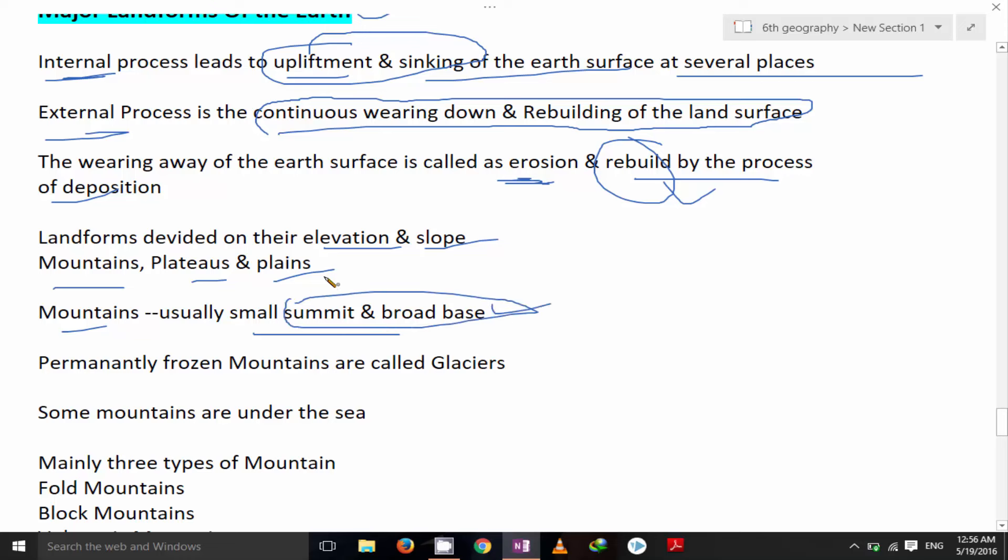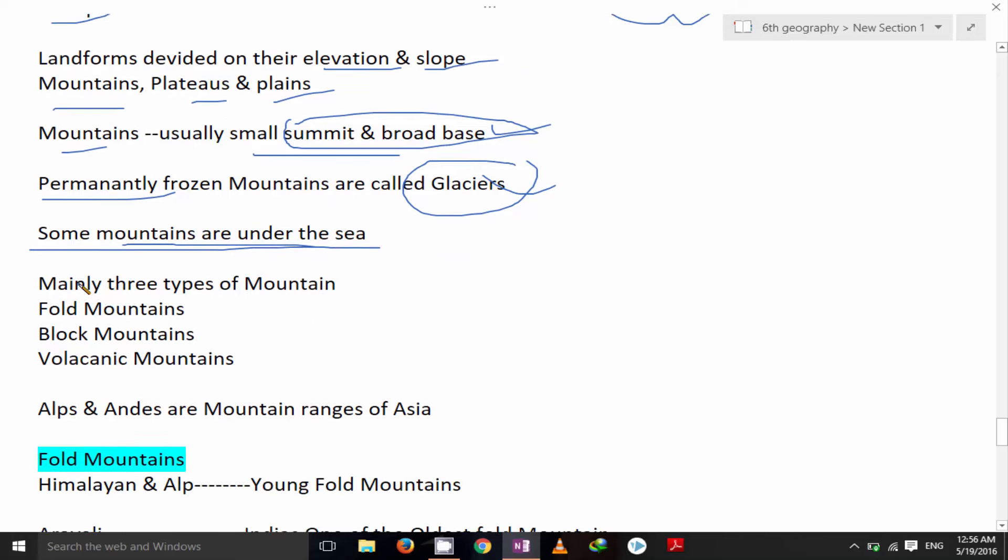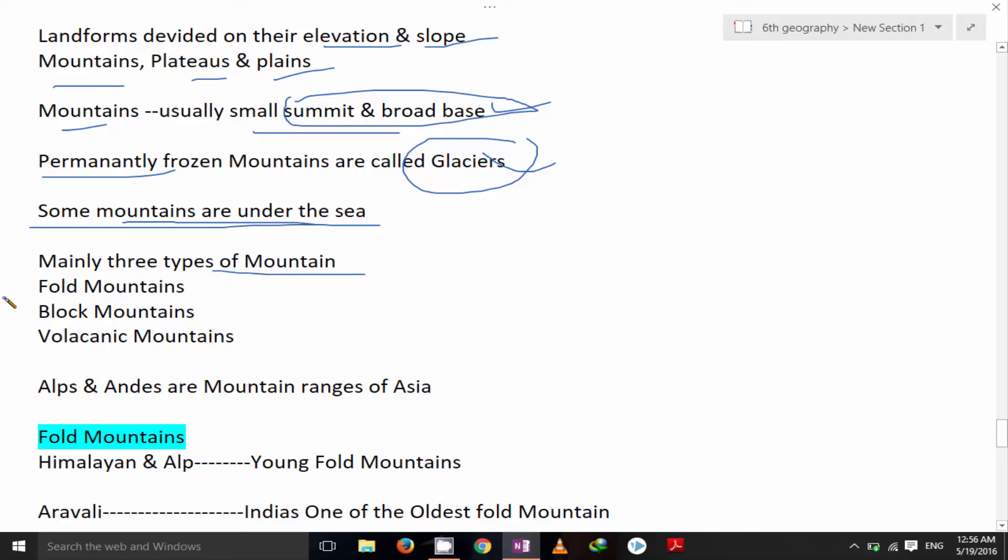Permanently frozen mountains are called glaciers. We cannot see but some mountains are under the sea. Mainly three types of mountains: fold mountain, block mountain and volcanic mountain.